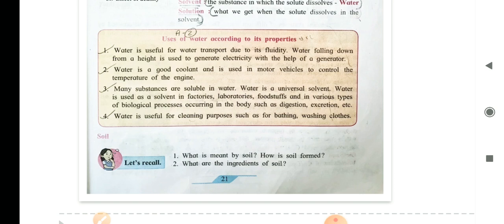Question 2, what are the ingredients of soil? Ingredients means what it contains. Mineral particles, air, organic matter, water and living organisms are found in the soil.